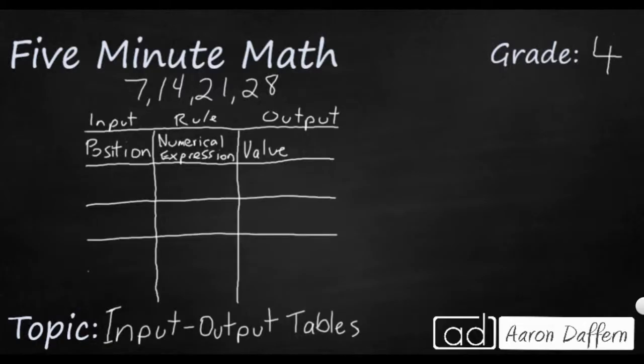So 7, 14, 21, 28. So position is literally which place are they in this list. So this is 1st, 2nd, 3rd, and 4th.